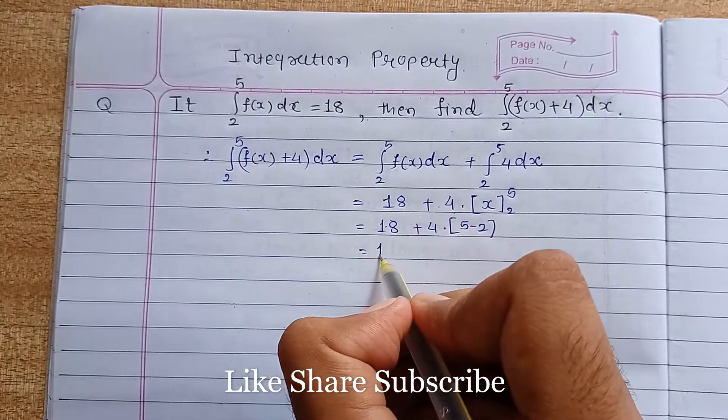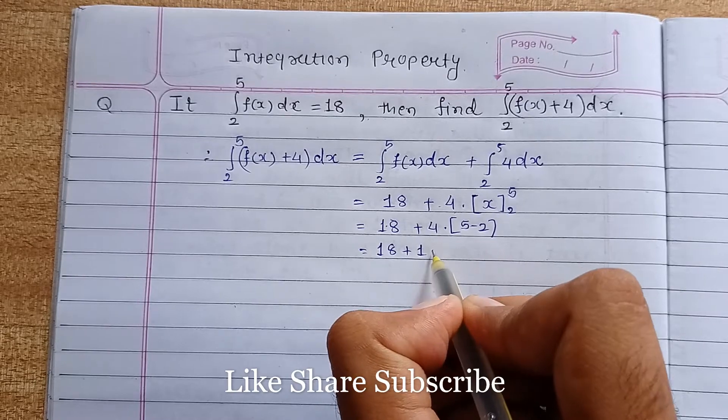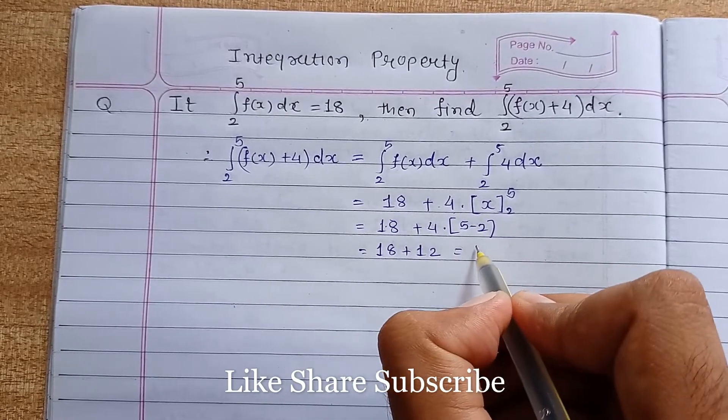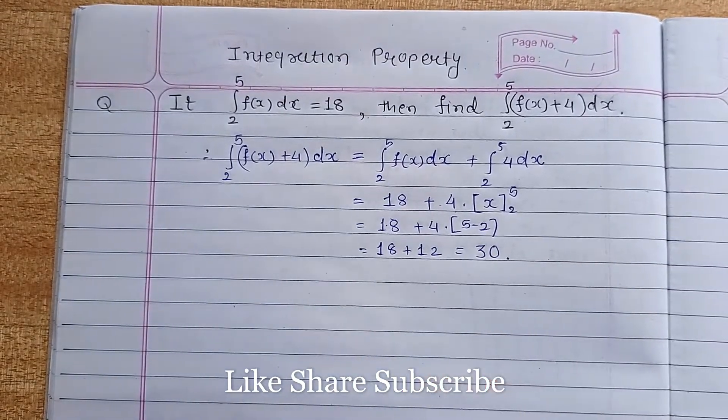That is 3 multiply by 4, which is 12. So 18 plus 12 equals 30. This is your answer.